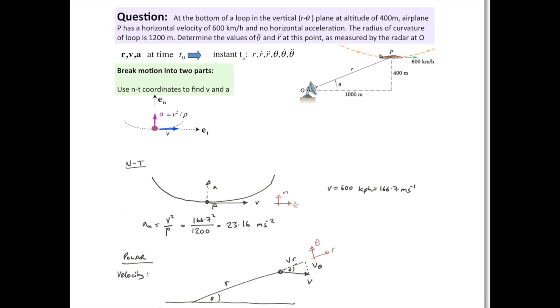So starting off with normal tangential, you know, this is a circular path. You're told there's no tangential acceleration, so the AT component is zero. But of course, because you're going on a circular path, you're going to have an acceleration component towards the centre of the circle.